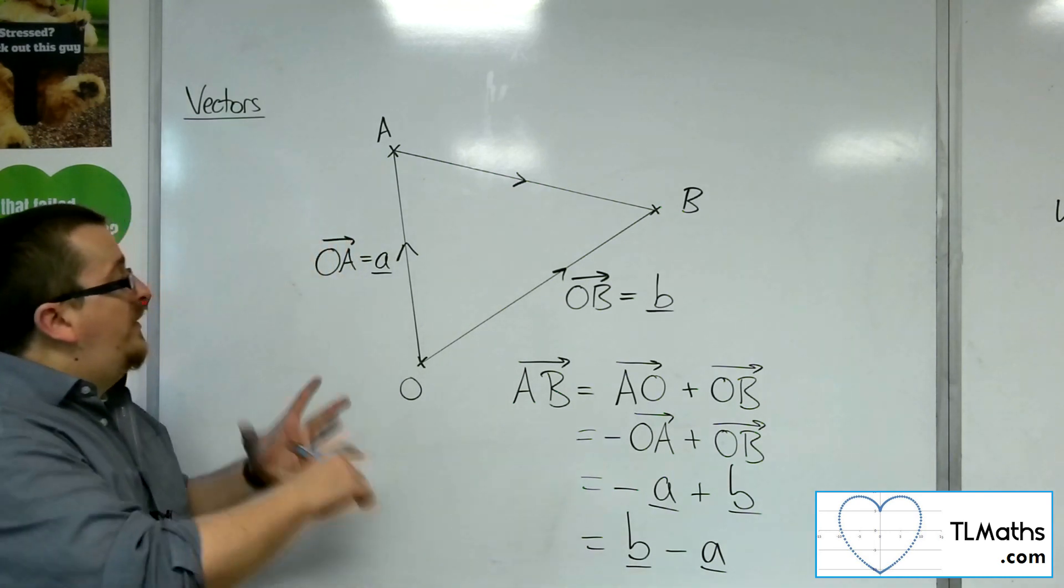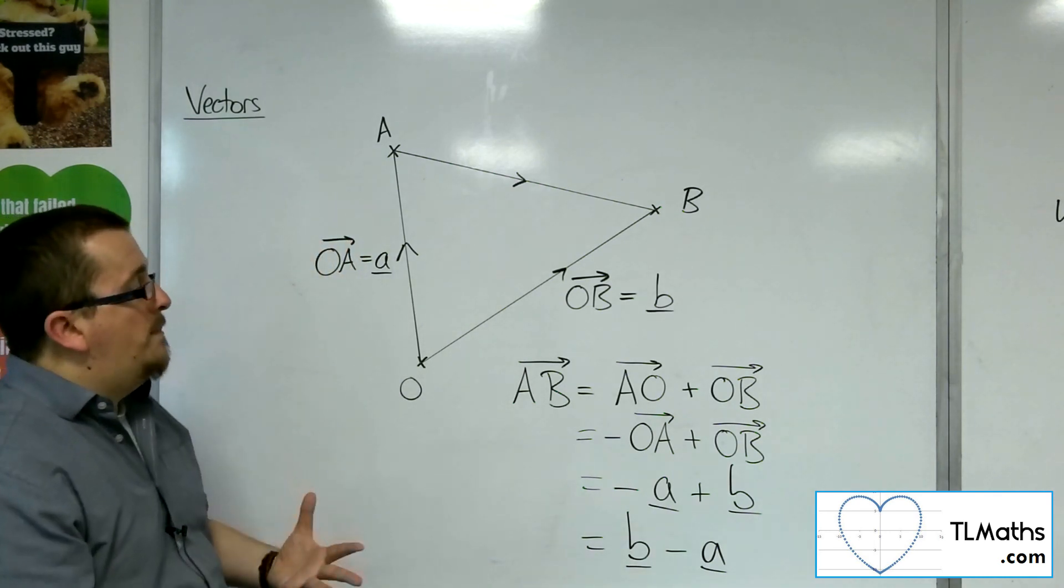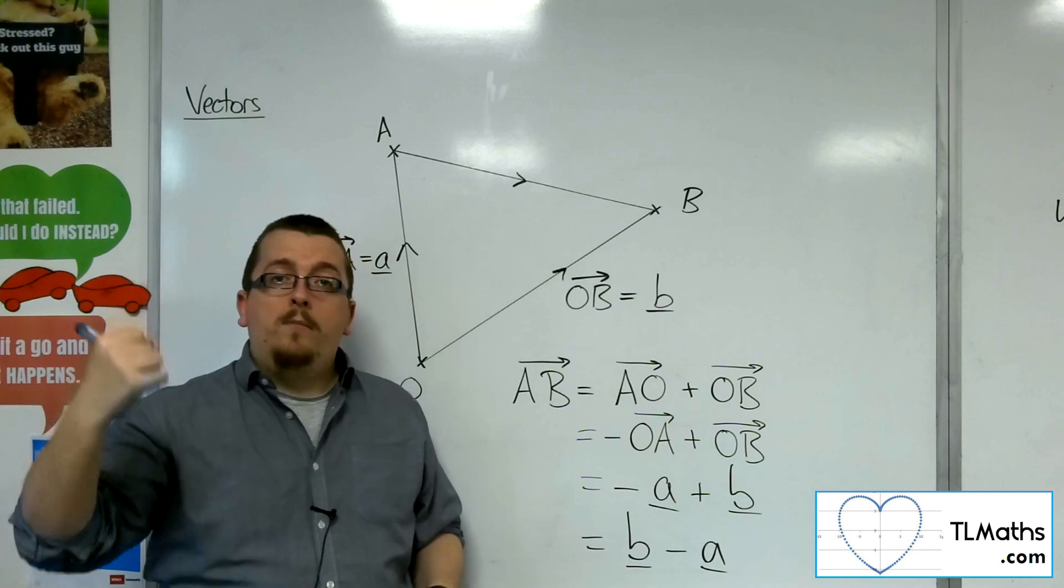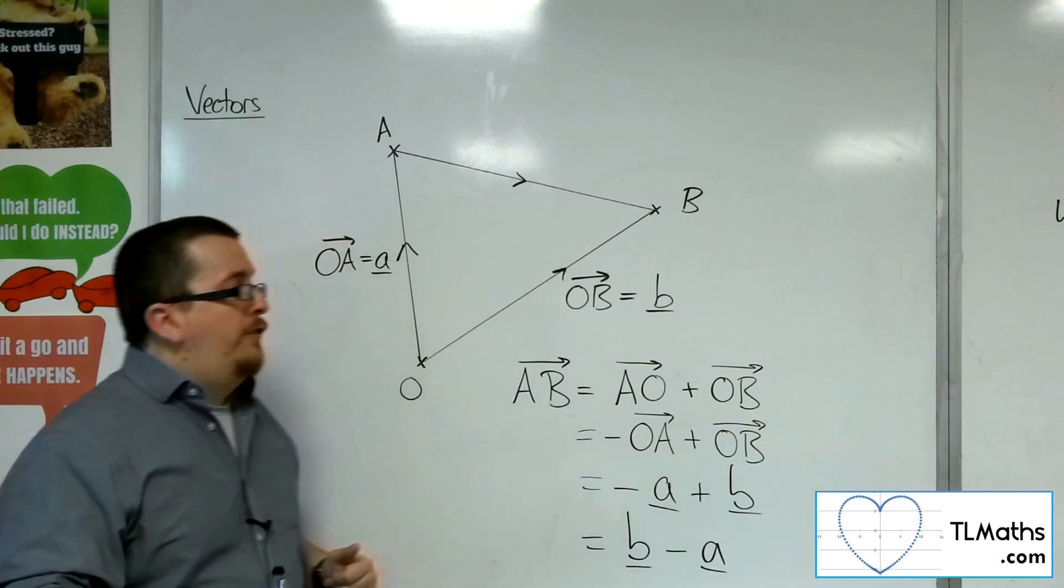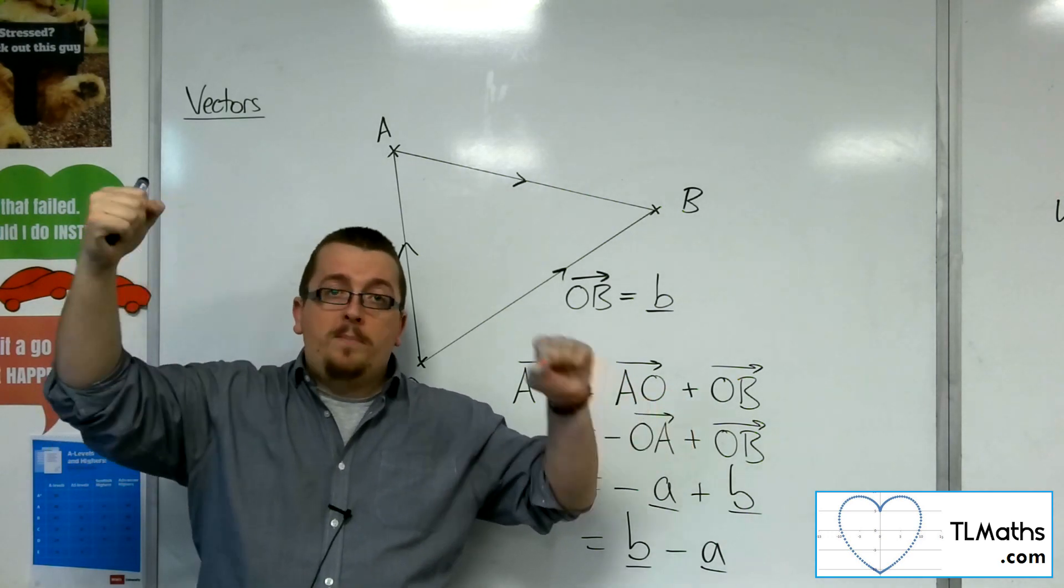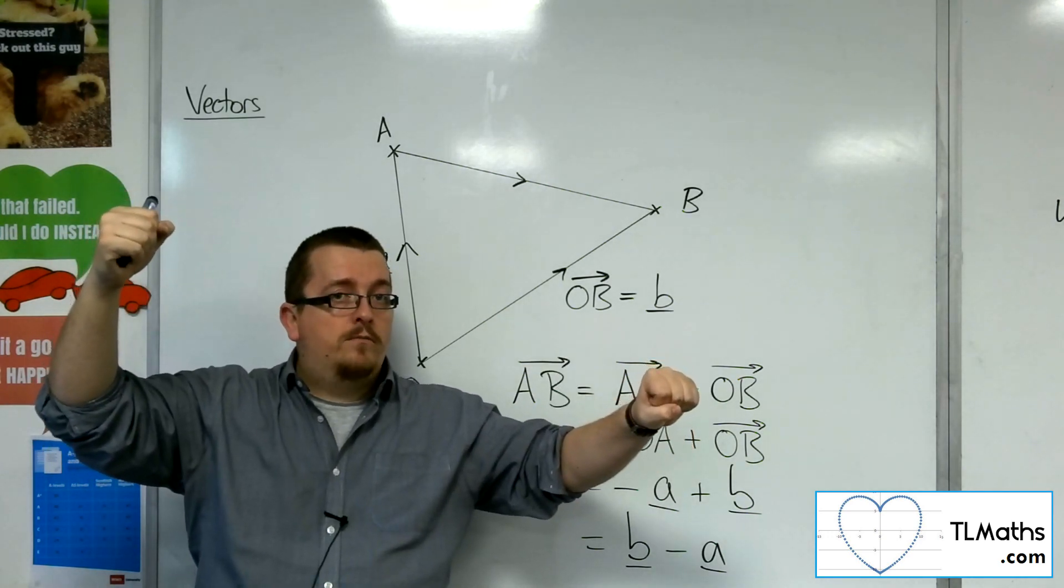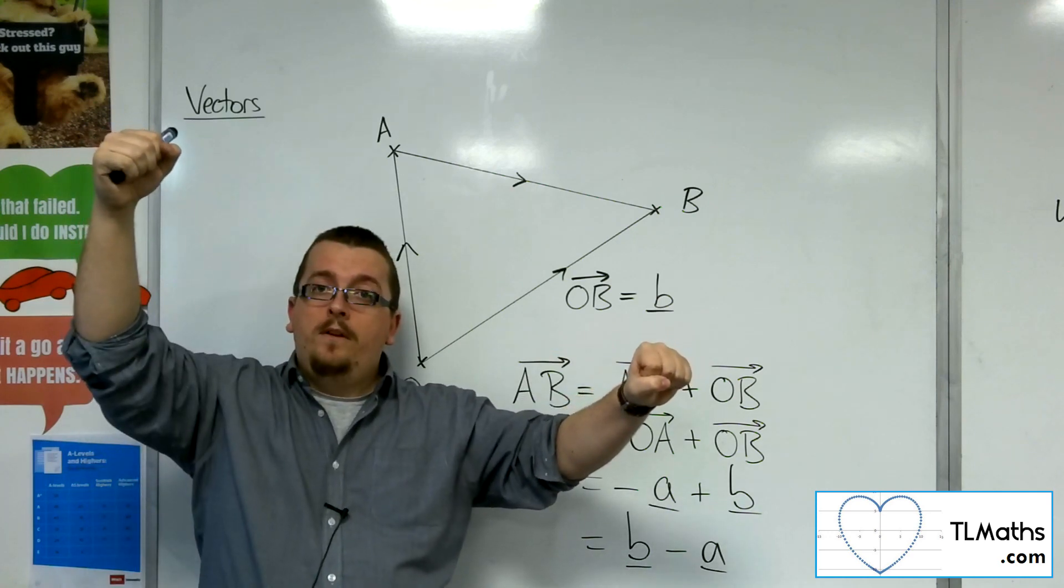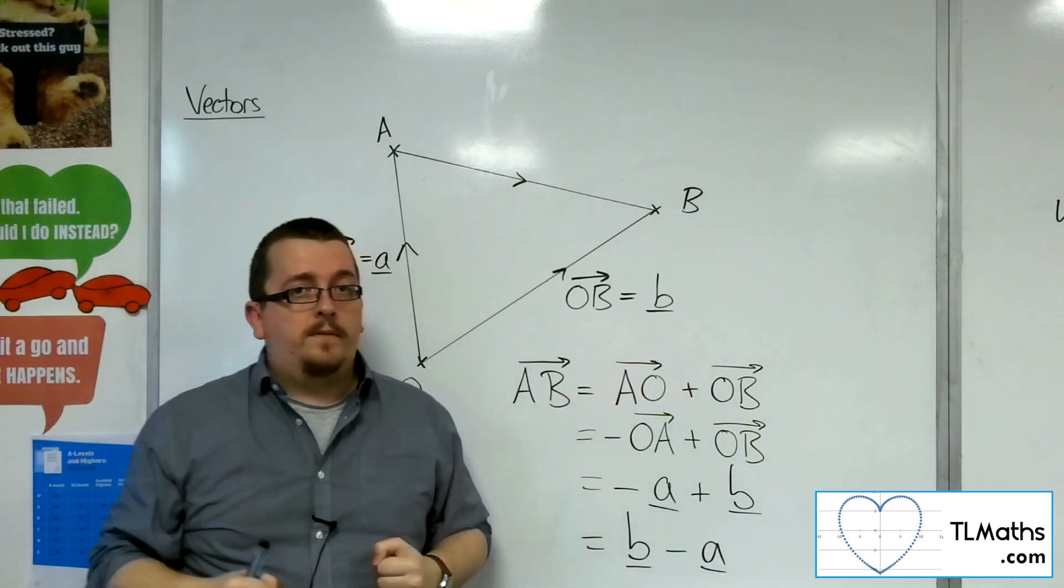OK, so this is a very useful thing to remember to get from one point to another, the vector that gets there. If you've got points Q and P, then Q to P is P minus Q. If it's P to Q, then it's Q minus P.